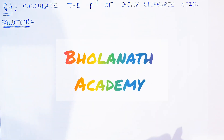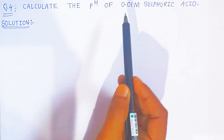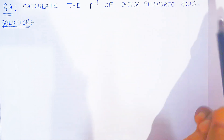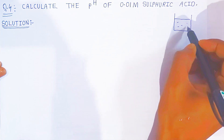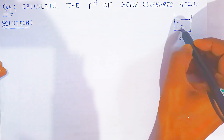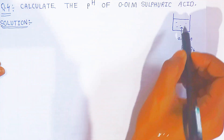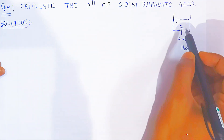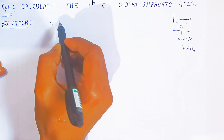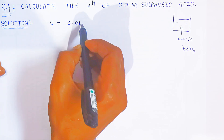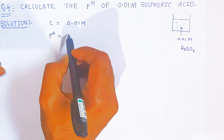Hello students, welcome to Bolanath Academy. In this video we are going to see question number four. You have to calculate the pH of 0.01 molar sulfuric acid. In your beaker, sulfuric acid is given with a concentration of 0.01 molar. So what is given: concentration is 0.01 molar, and we have to calculate pH.